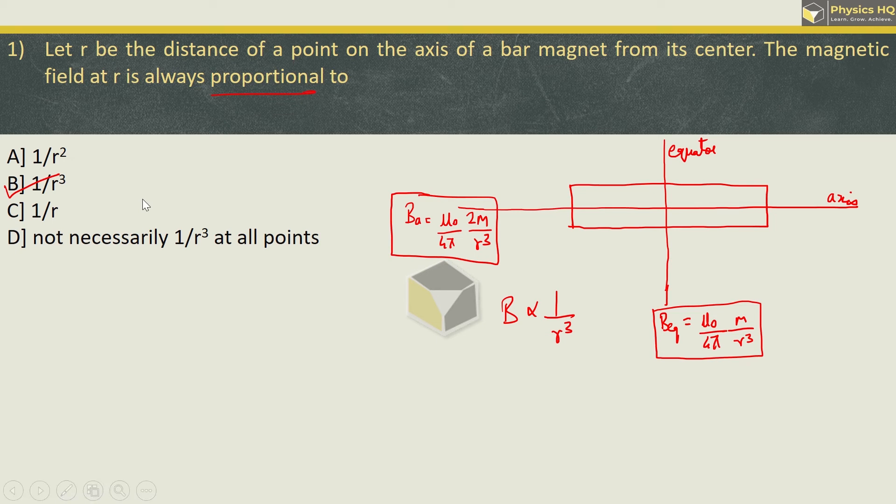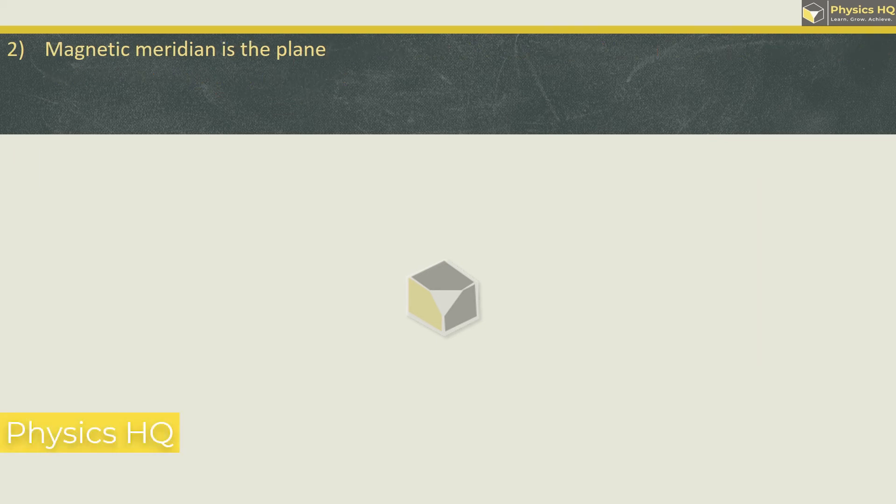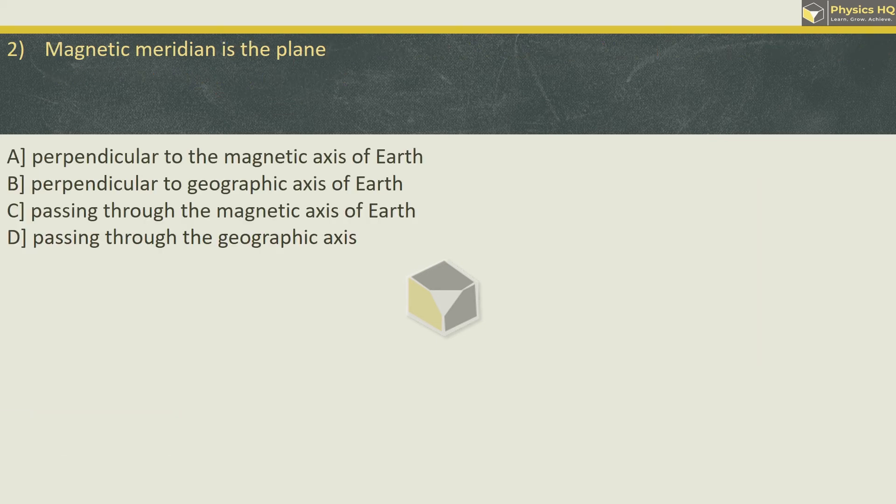The magnetic field at R is proportional to 1 by R cubed. I hope you all understood this. Next, magnetic meridian is the plane which passes through the magnetic axis of the earth. So the correct option is option C.